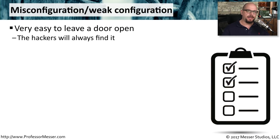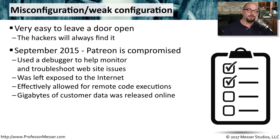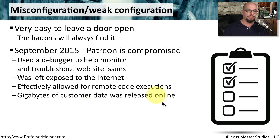If there is a weak link in the chain, the bad guys are going to find it. You have to be very diligent about making sure all of your systems are configured properly and that you haven't left any doors or windows open. A good example of a misconfiguration occurred in September of 2015 when Patreon was compromised. This was because they used a debugger on their web servers to help provide troubleshooting information, and that debugger was exposed to the internet rather than only being open internally. People were able to use this debugger to run remote code executions, which allowed them to run whatever process they wanted on the Patreon server. Gigabytes of customer data was not only stolen but also released online.